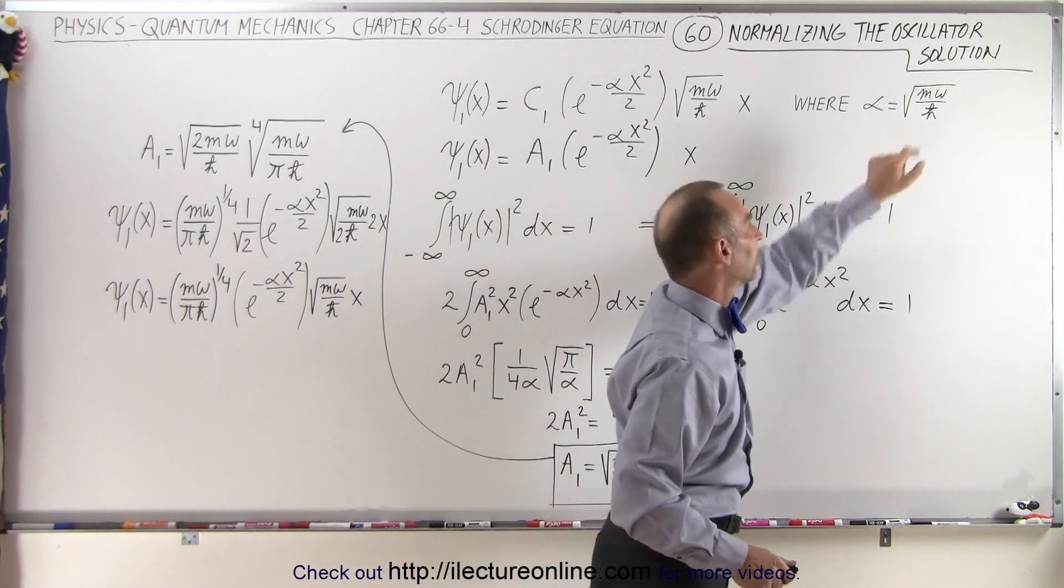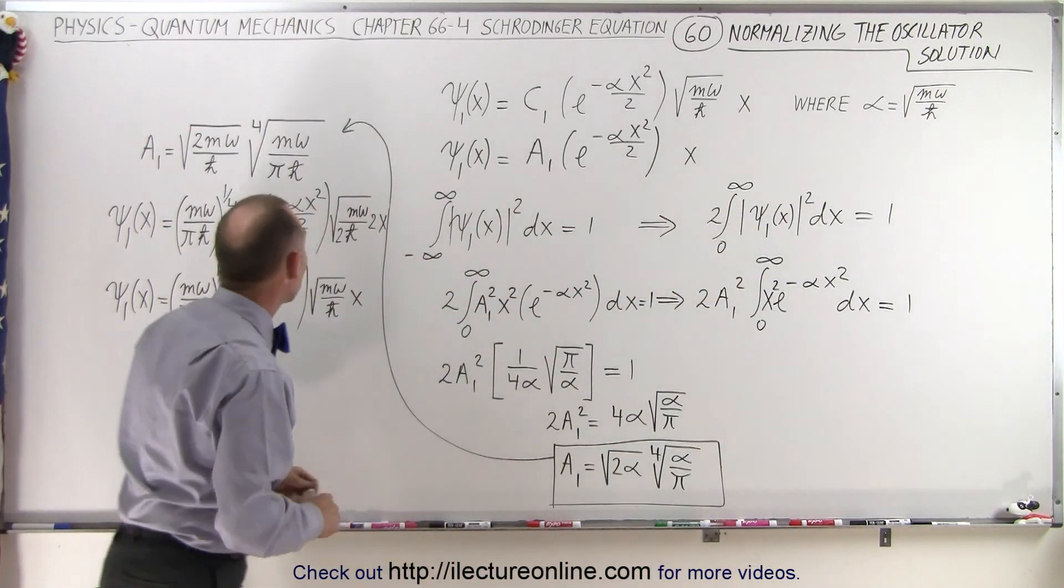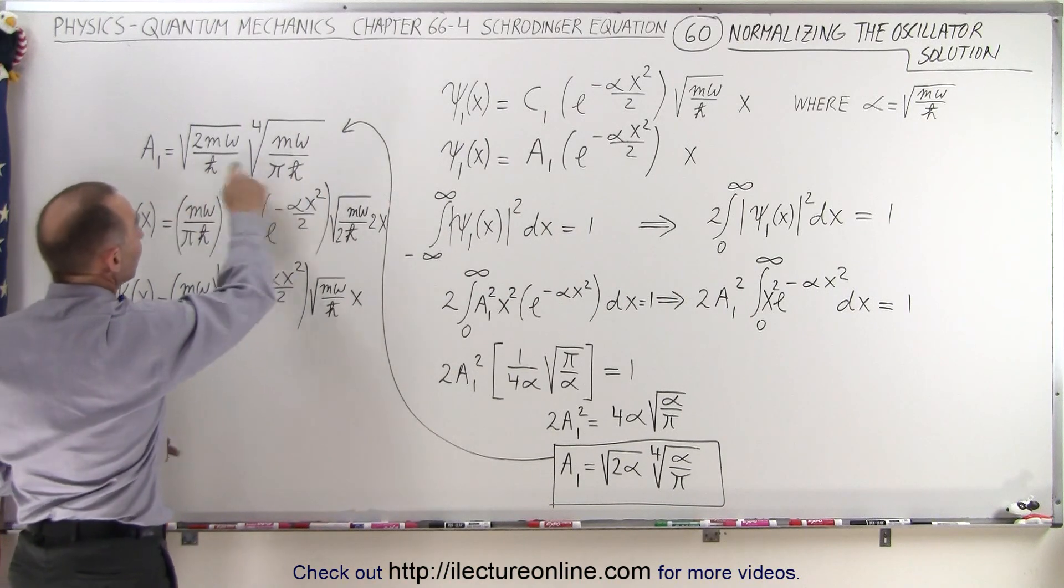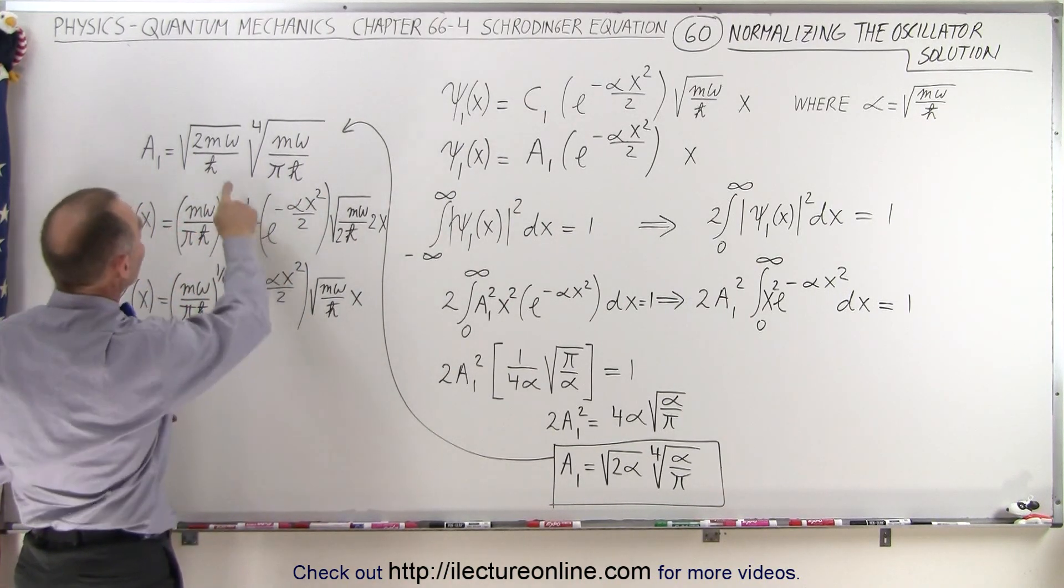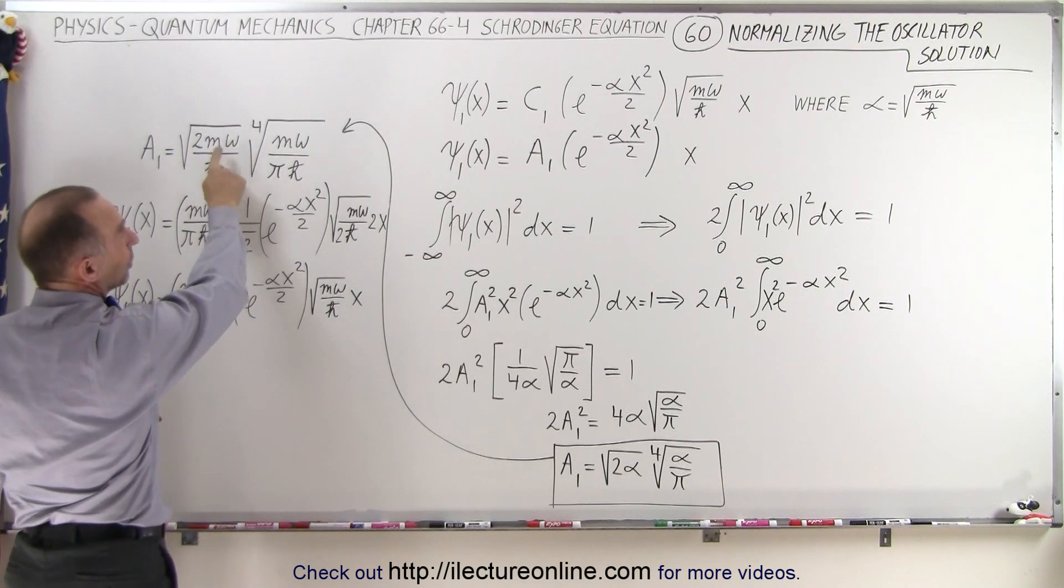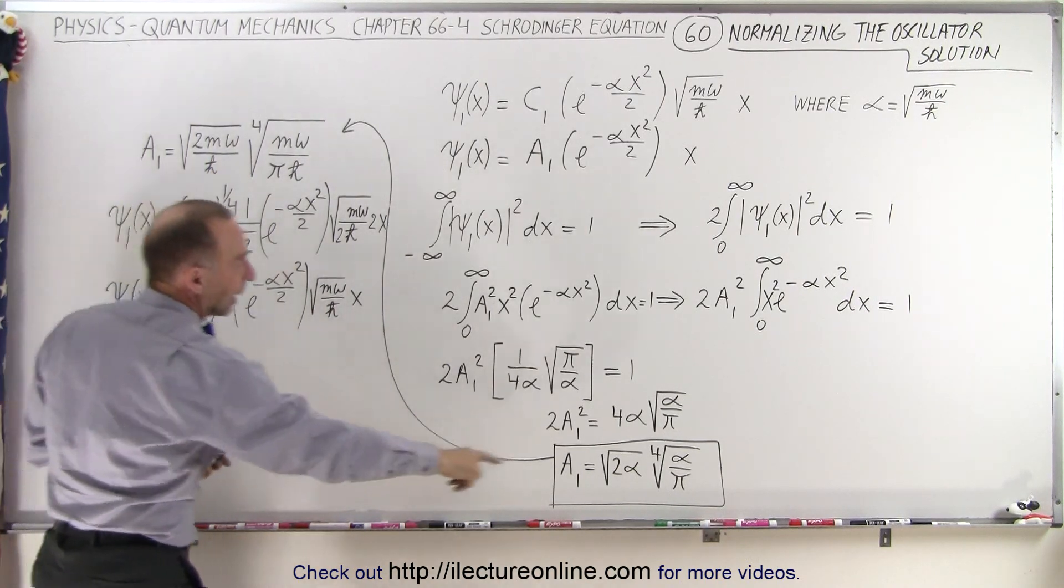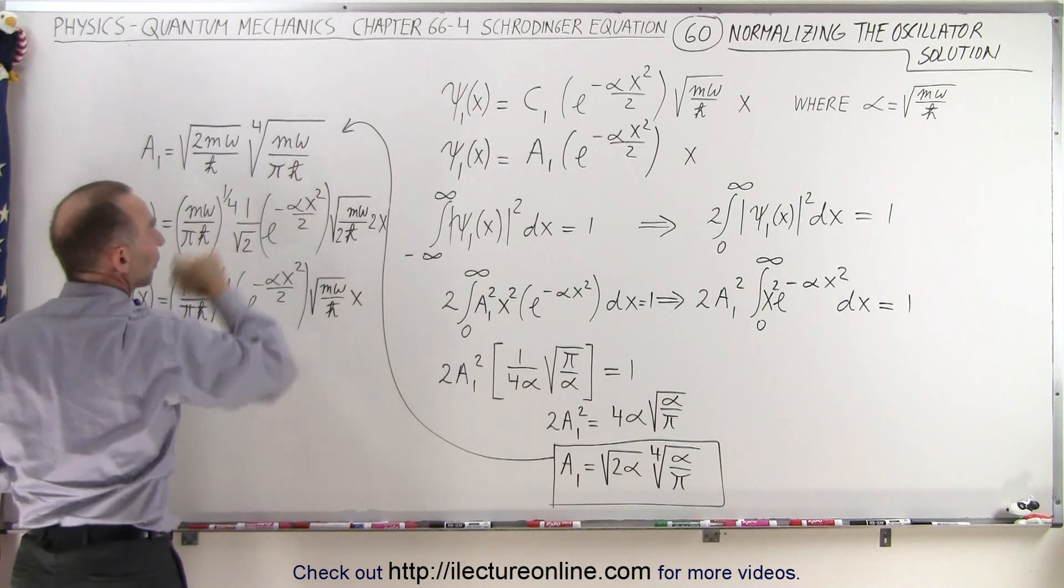Of course, alpha again defined right here. So what that means is, since a is equal to this, and what I've done is, I've replaced alpha by what alpha is equal to, m omega over h bar, and over there as well, m omega over h bar.